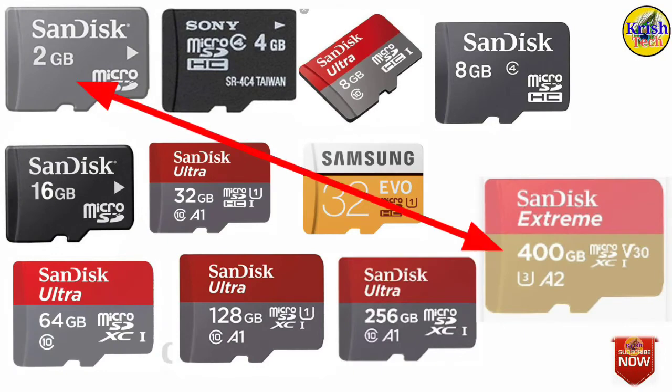There are two types of GP. There are different MP categories and starting stages. Available sizes include 4GB, 8GB, 16GB, and 64GB.